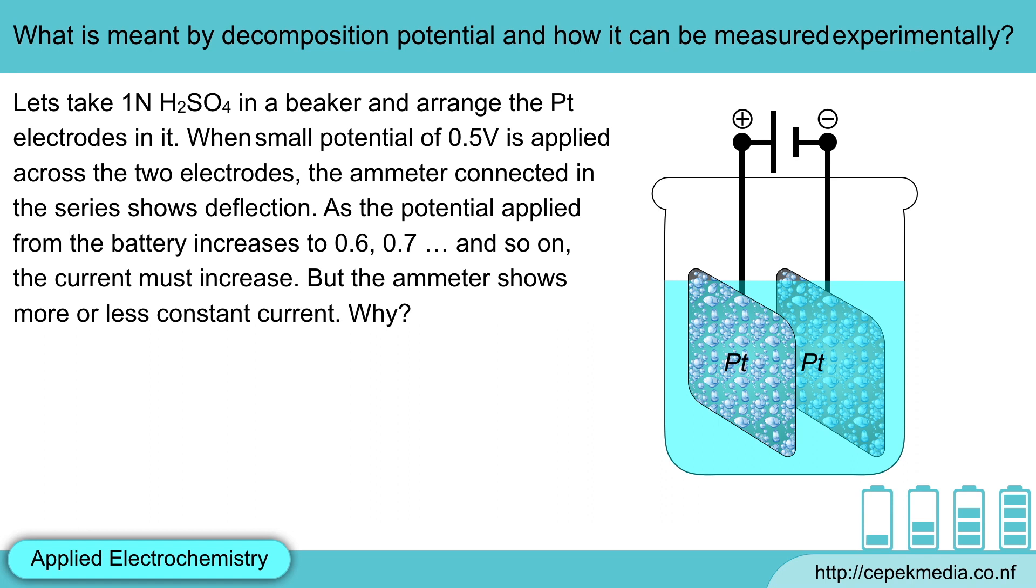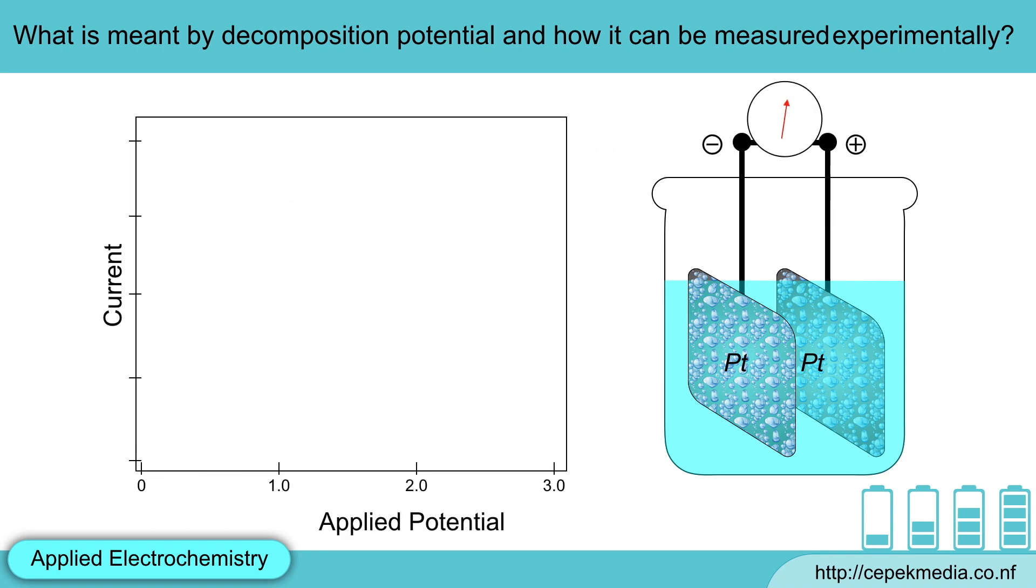So, no deposition at the electrodes and no increase in current. But when the applied potential is more than 1.7V, then there will be continuous electrolysis phenomena and current increases rapidly.